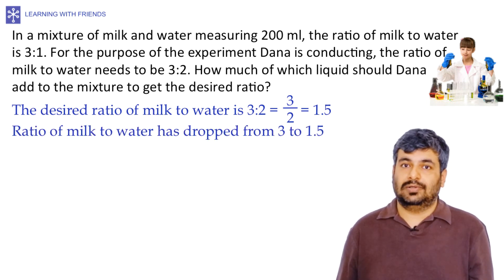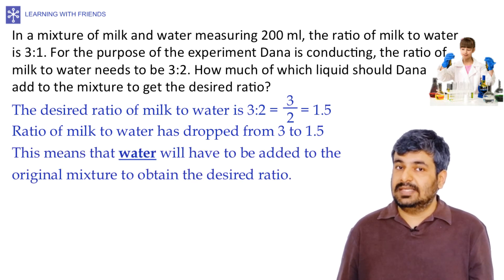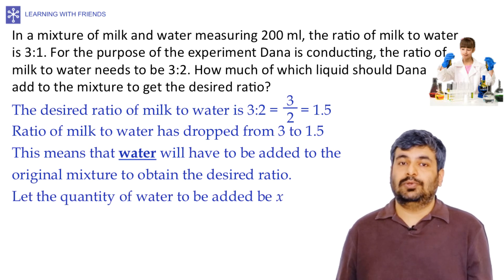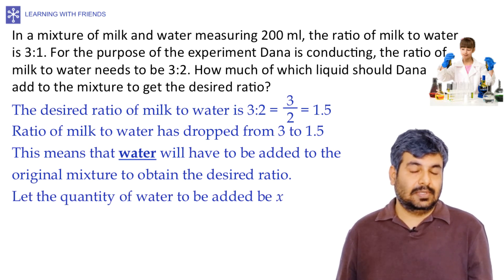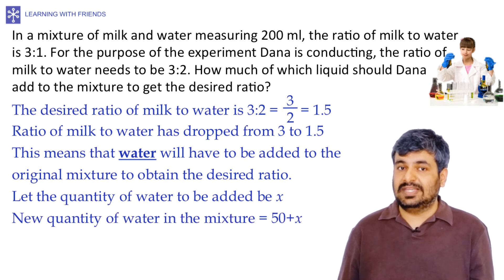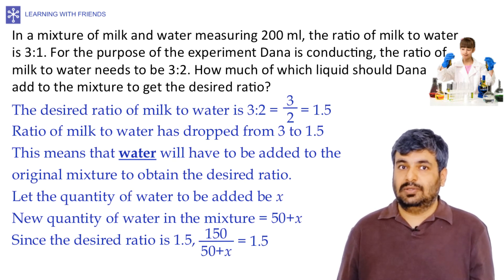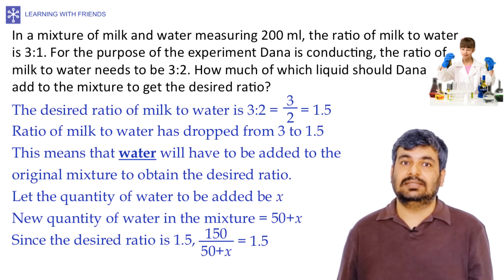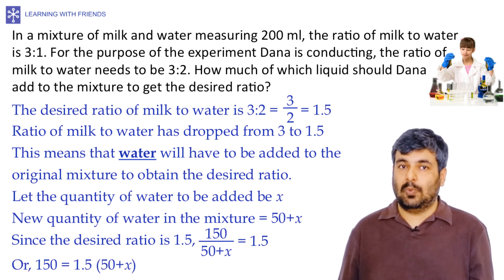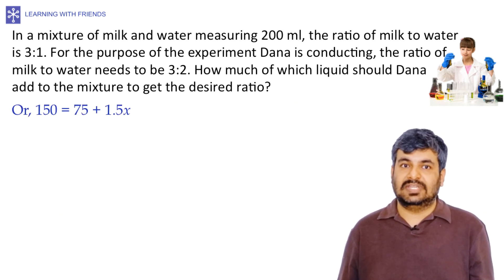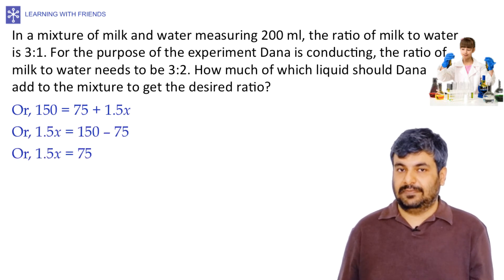The ratio of milk to water has dropped from 3 to 1.5, meaning water must be added. Let x be the quantity of water to be added in ml. The new quantity of water becomes 50 + x. Since the desired ratio is 1.5, we have 150 / (50 + x) = 1.5. Cross multiplying: 150 = 75 + 1.5x, giving x = 50.